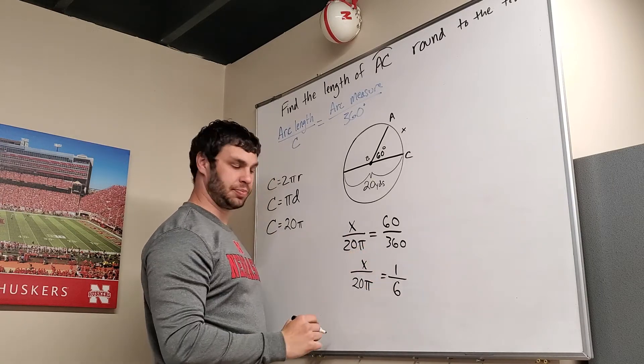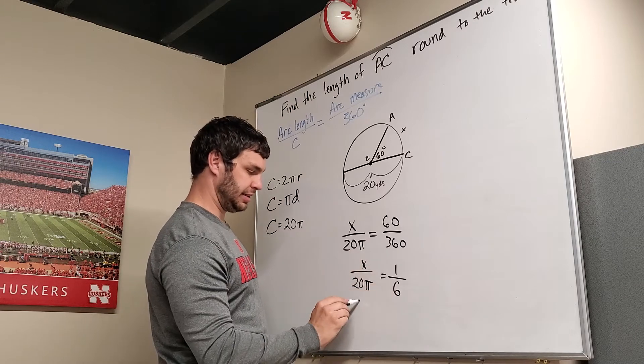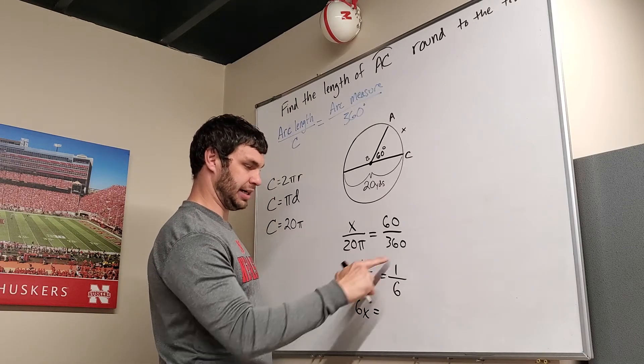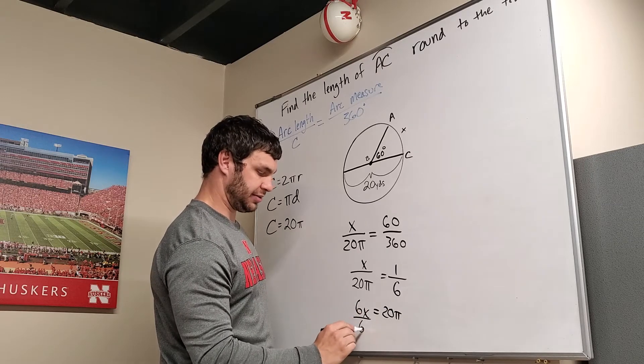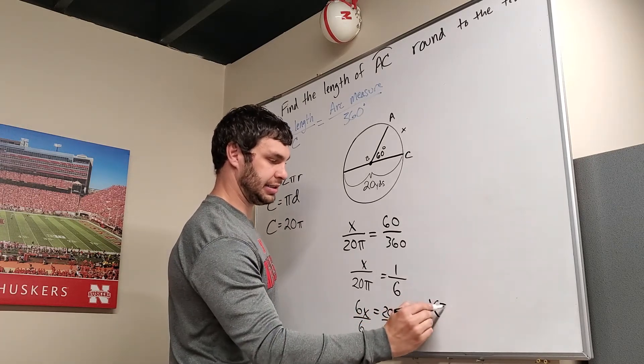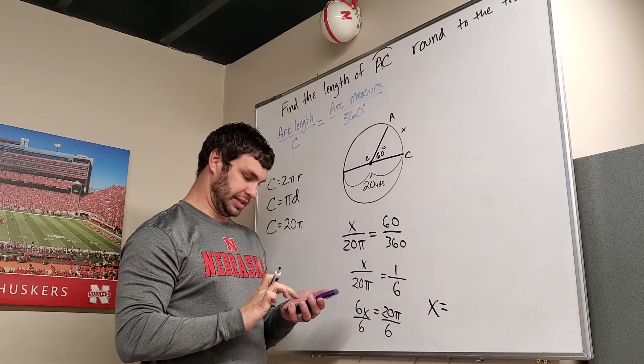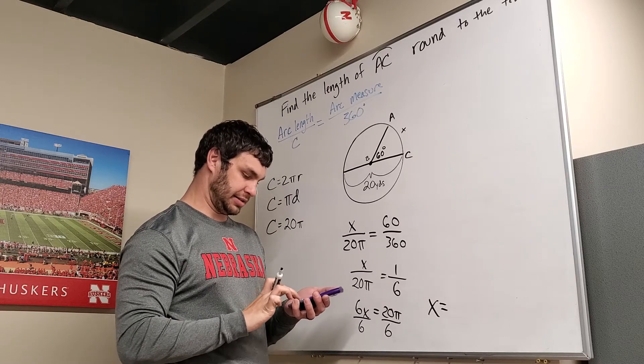If I cross multiply, x times 6 is 6x, 20 pi times 1 is 20 pi. So then if I just divide by 6, x equals 20 pi divided by 6, which is 10.5.